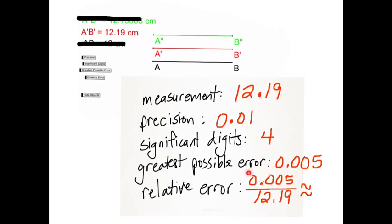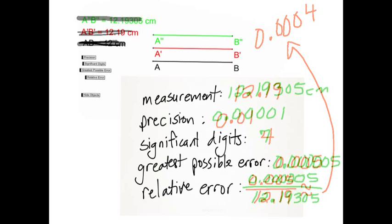And then the relative error, we're putting that 0.005 or 5 one-thousandths over 12.19. And when we do that, we get approximately 0.0004, or that's 4 ten-thousandths.